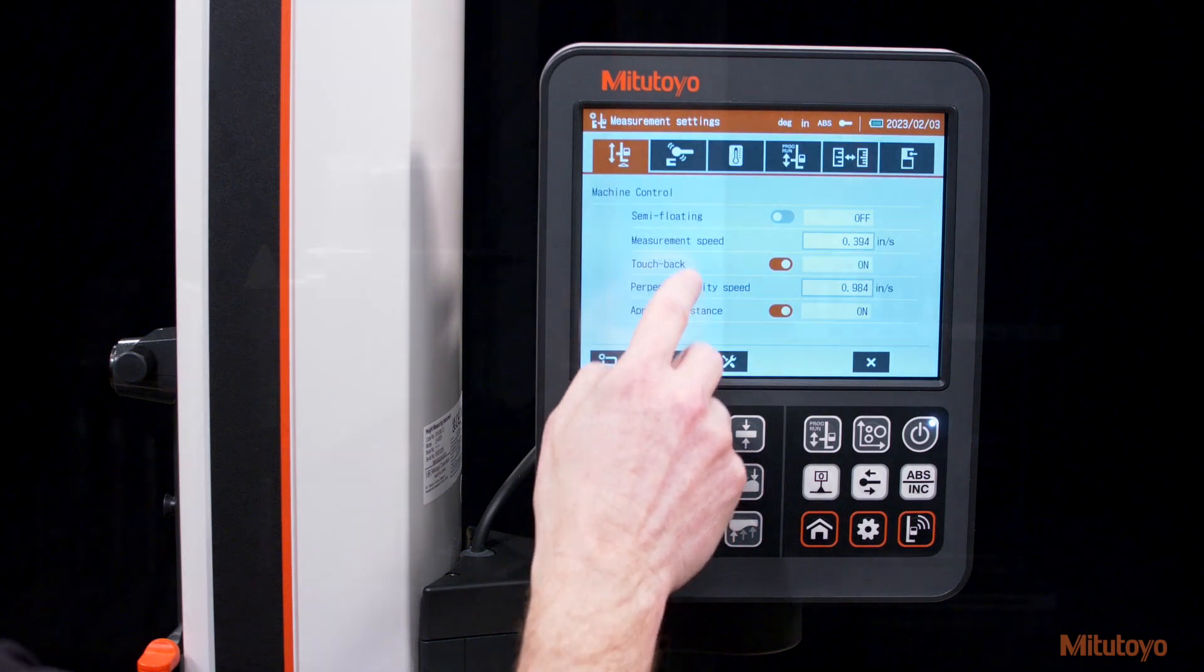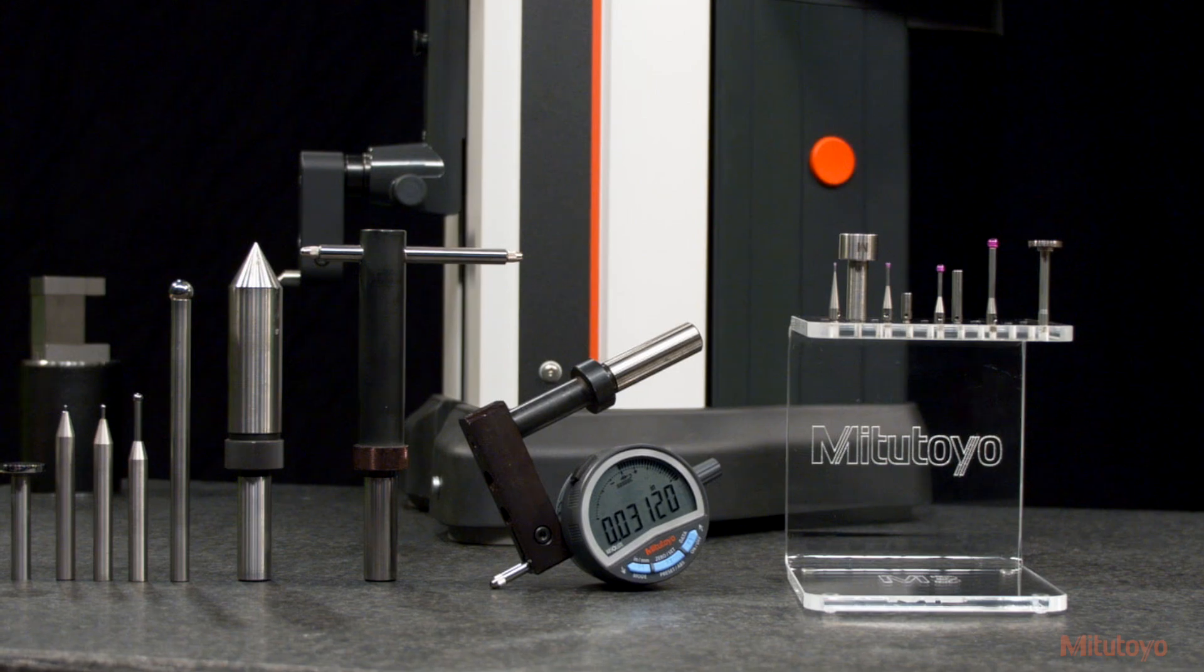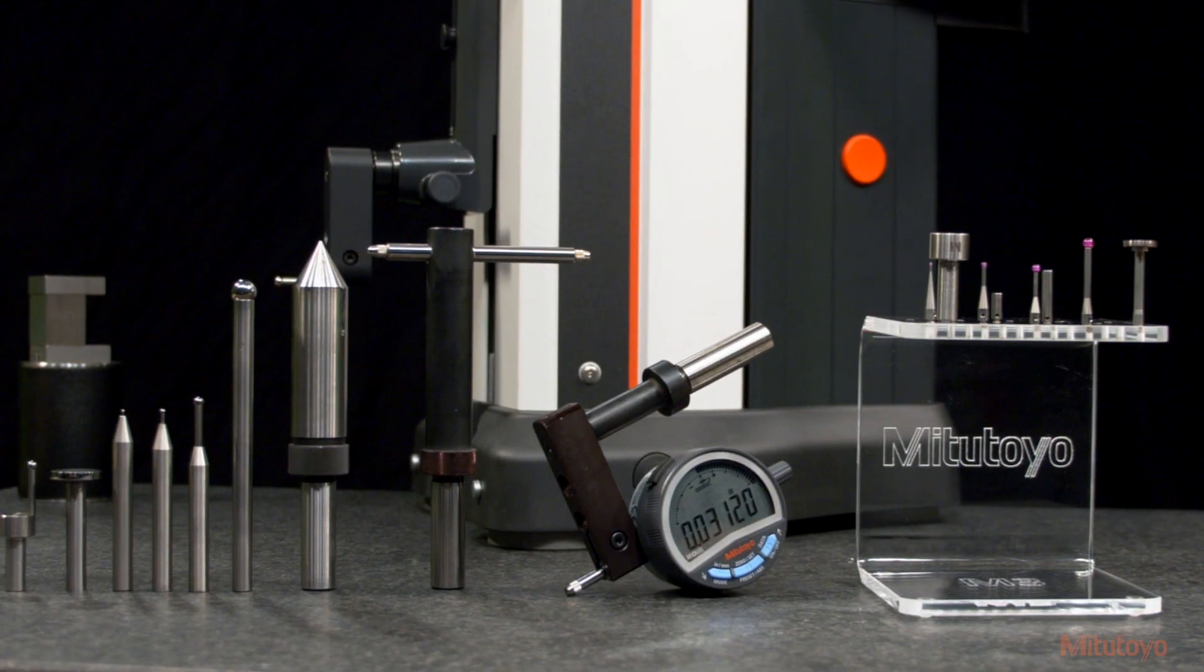All of this advanced technology in one intuitive, easy-to-use system makes the Mitsutoyo LH600F one of the most trusted linear height gauges in the industry.